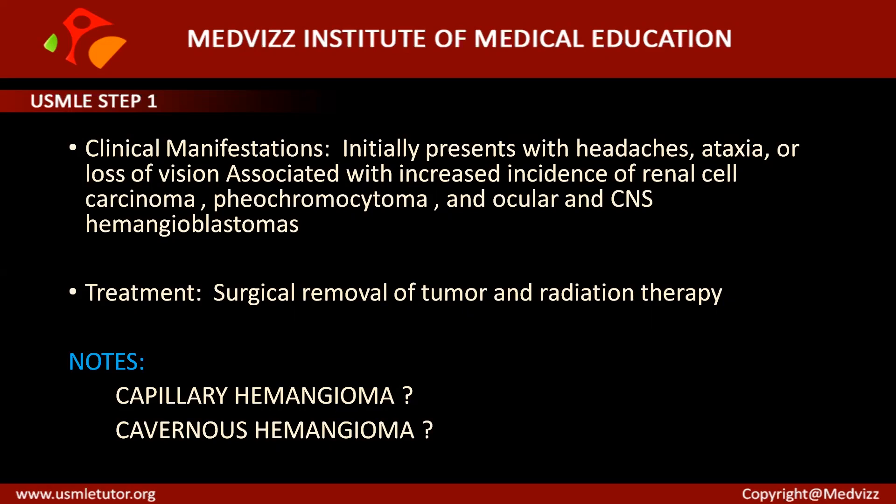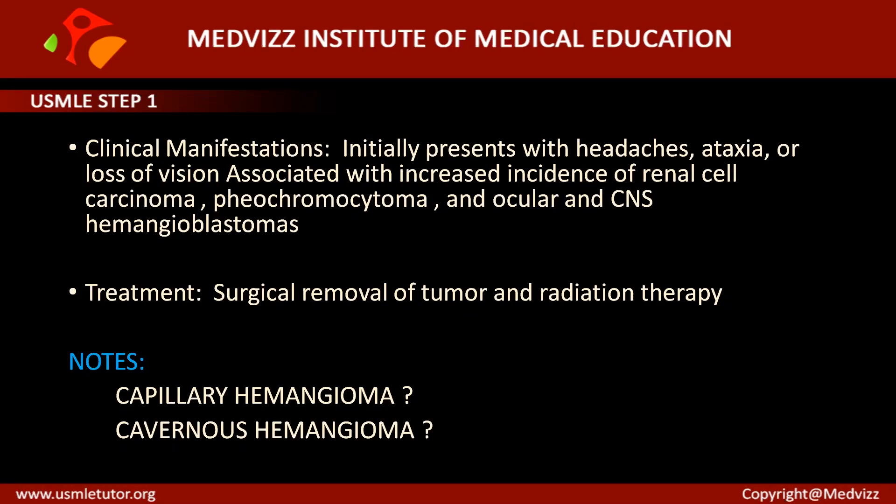The disease initially presents with headache, ataxia, or loss of vision, as seen in this case. It is also associated with an increased incidence of renal cell carcinoma and pheochromocytoma. Adenomas and cysts of the liver, kidney, and pancreas are also common in Von Hippel-Lindau, along with ocular and CNS hemangioblastomas.